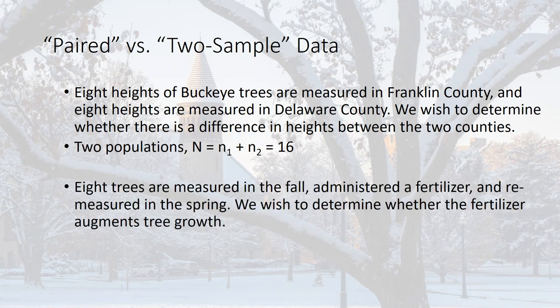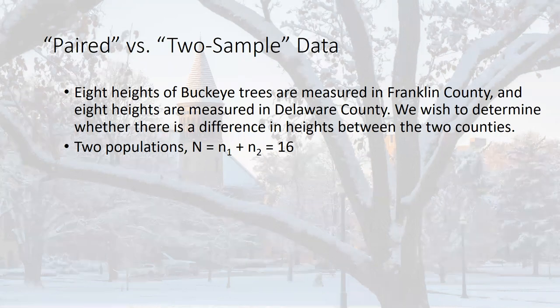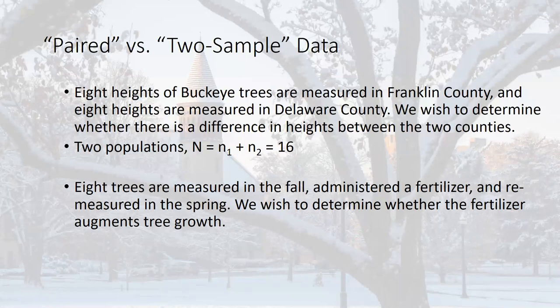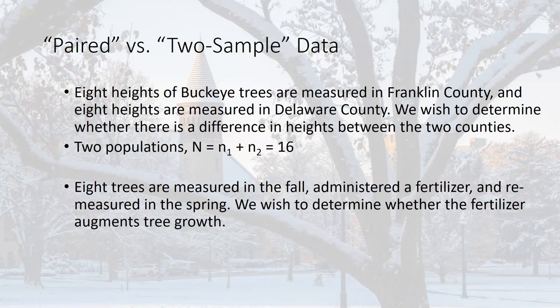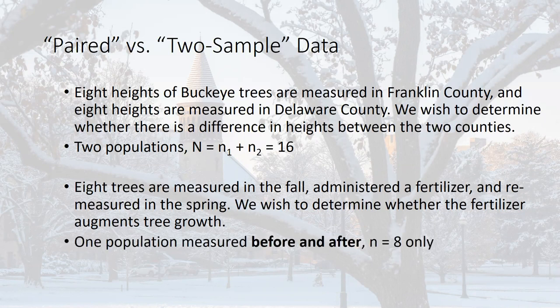How would we conduct a hypothesis test in the two-sample case? If we have a large enough sample size, we could use the central limit theorem. If not, and if the data are normally distributed, we could use a t-test with the pooled variance or the Satterthwaite equation. But what about this situation: eight trees are measured in the fall, we give them fertilizer, and re-measure those trees in the spring. We're measuring the same trees twice — there are only eight observations, not 16. There's one population of trees; we just measured each of them twice.